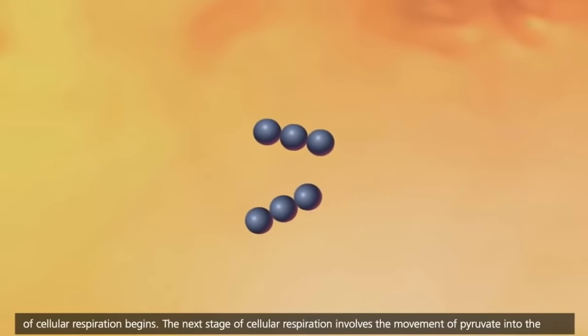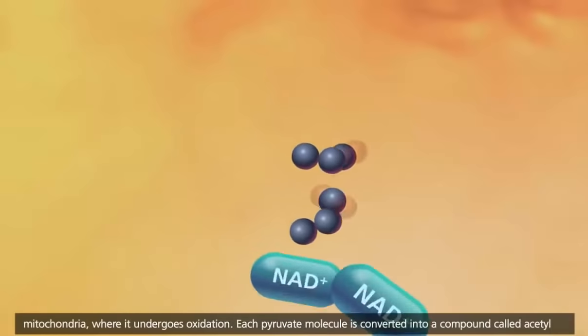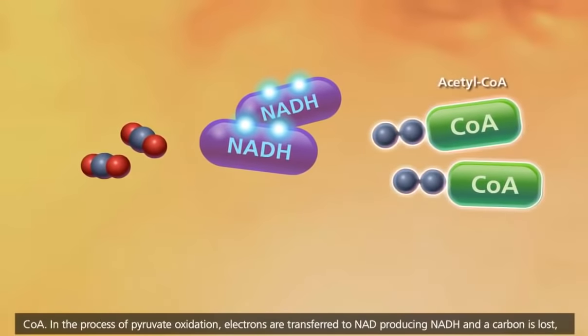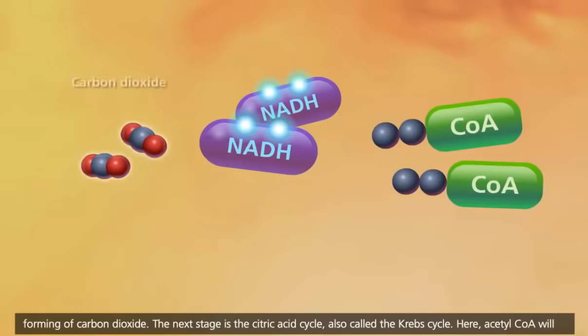The next stage of cellular respiration involves the movement of pyruvate into the mitochondria, where it undergoes oxidation. Each pyruvate molecule is converted into a compound called acetyl-CoA. In the process of pyruvate oxidation, electrons are transferred to NAD, producing NADH, and a carbon is lost, forming carbon dioxide.